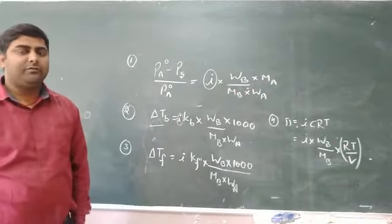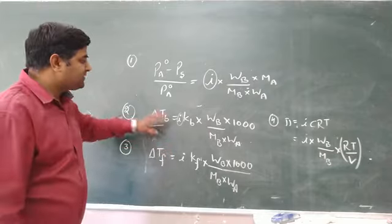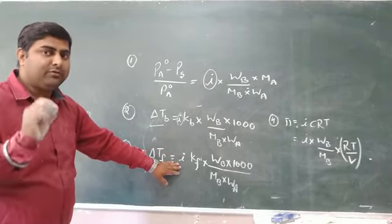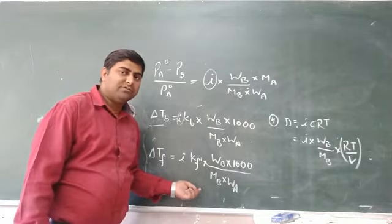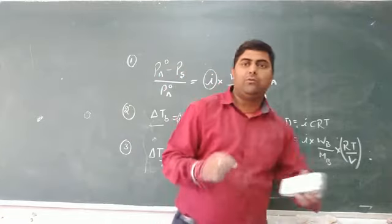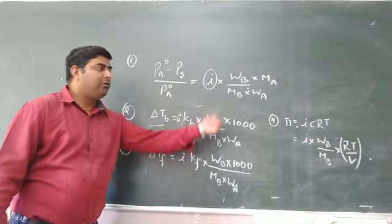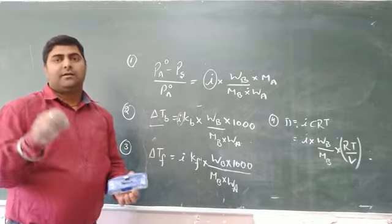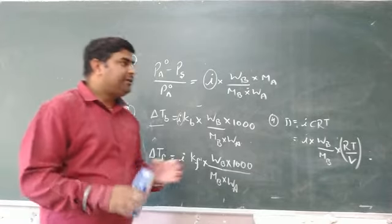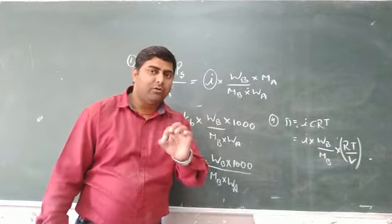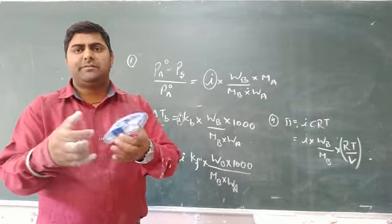While calculating molar mass for non-ideal solutes, we must use i. If the solute particles do not dissociate or associate, then i is taken as 1. But if association or dissociation takes place, the value of i changes. The Van't Hoff factor is applicable only for ionic substances where there are chances of association or dissociation. The next topic is degree of dissociation — we need to find a relation between the degree of dissociation and the Van't Hoff factor i.